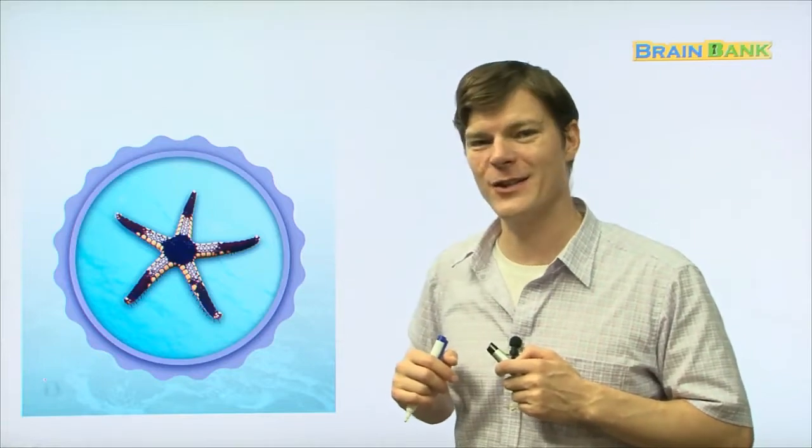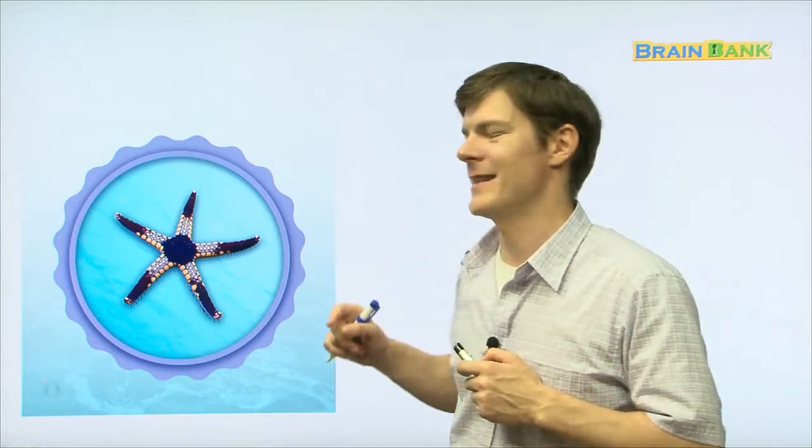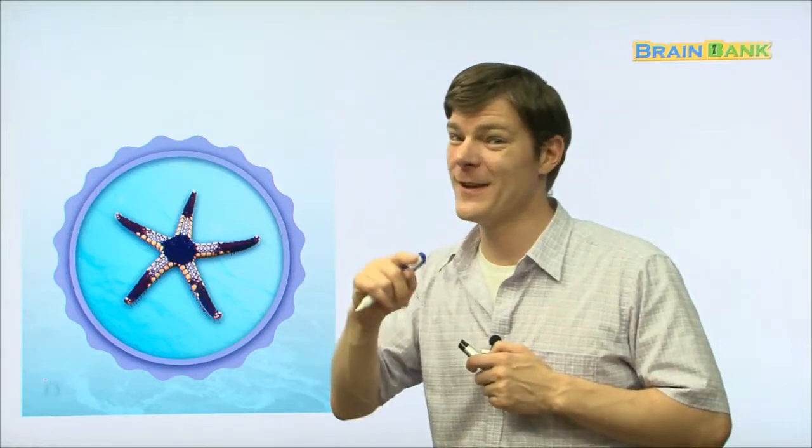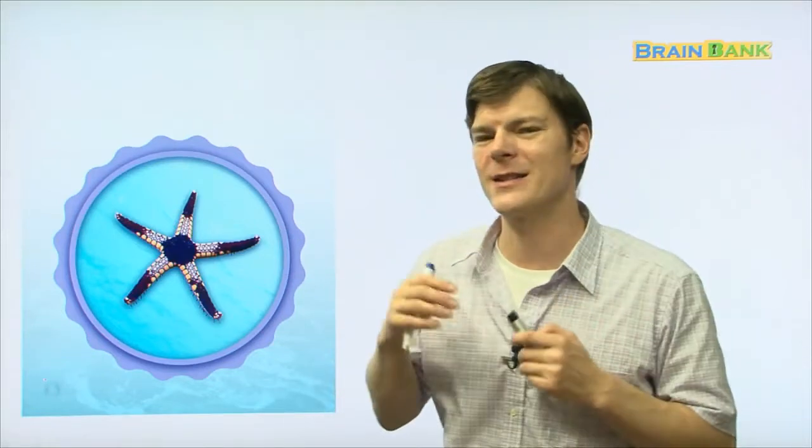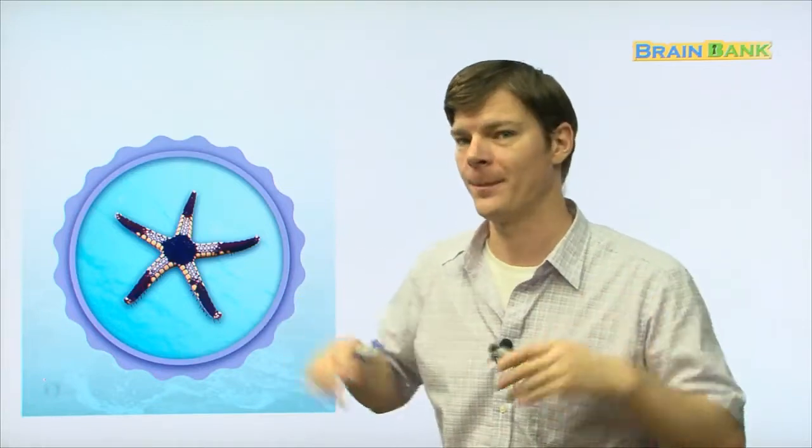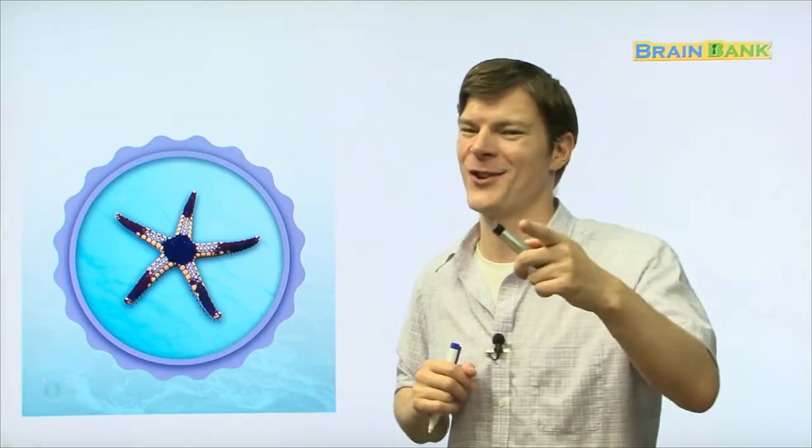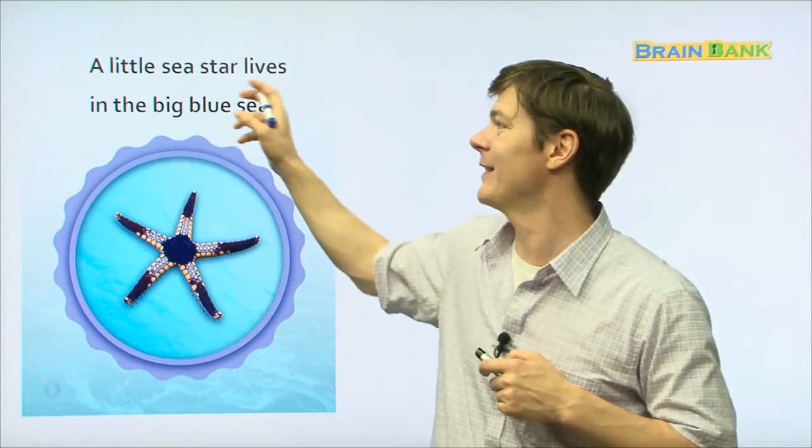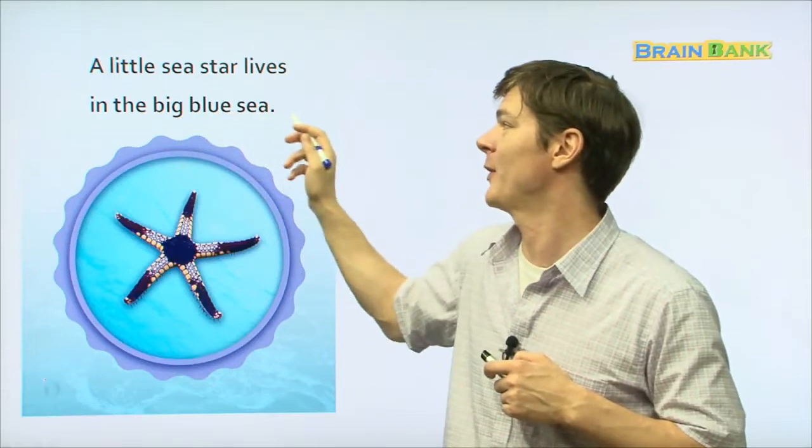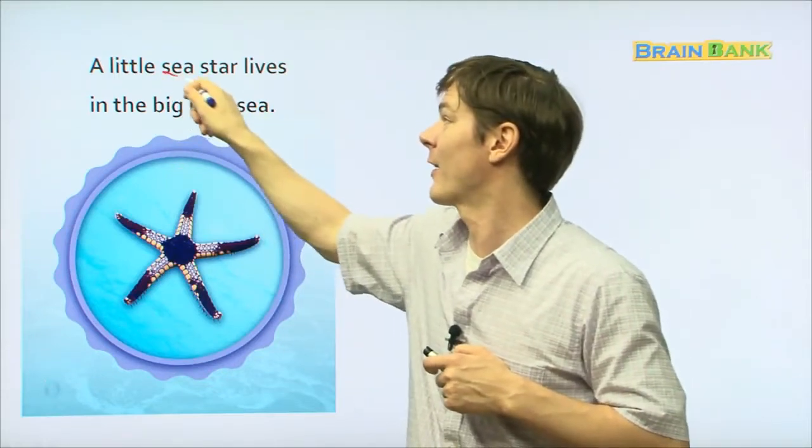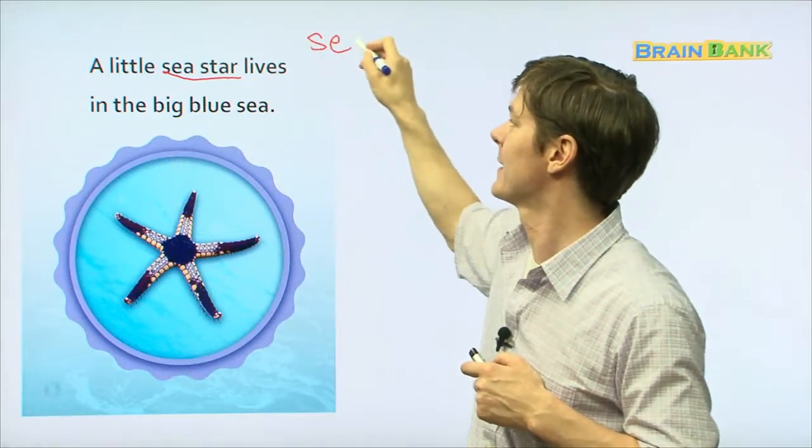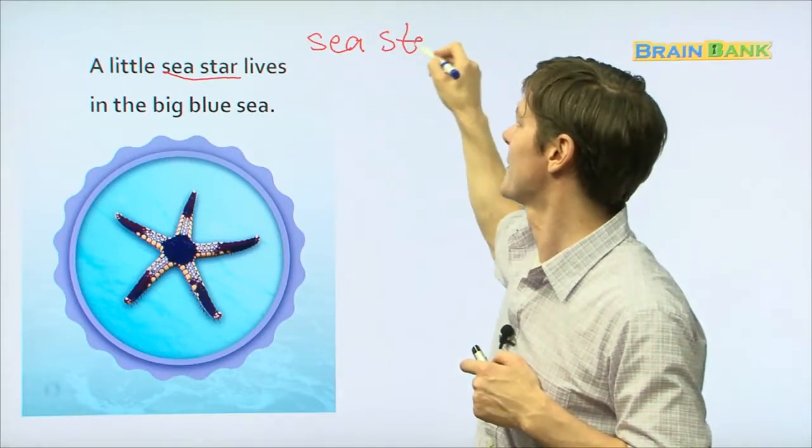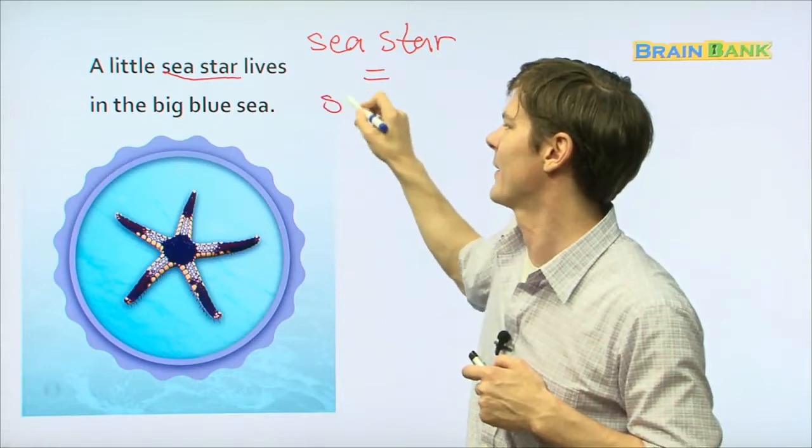Then, we have this. Do you know what this is? Is this a fish? No. This is a starfish. Not just a fish, but a starfish. And it really doesn't swim. It kind of crawls along the bottom of the ocean floor. Do you know what starfish is in Korean? Sure you do. Pulgasari. That's right. Very good. A little sea star lives in the Big Blue Sea. And let me just say, sea star is the same as starfish.